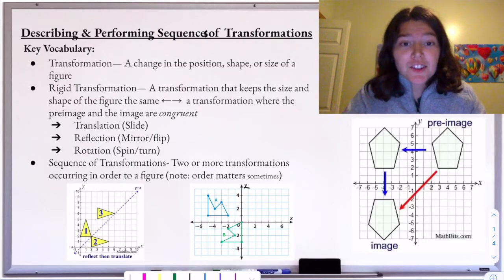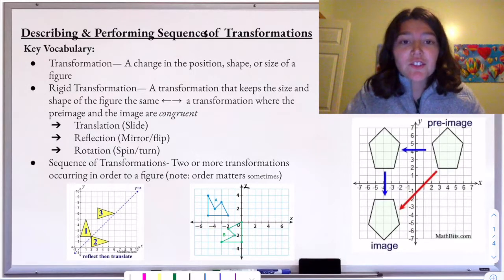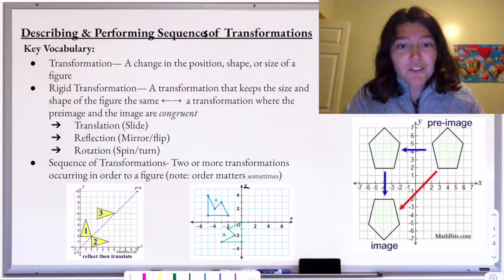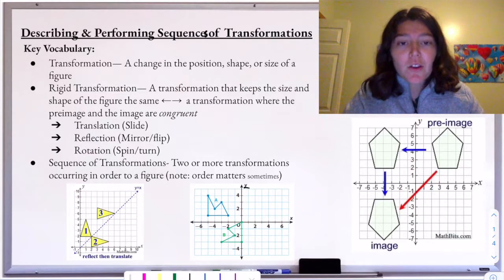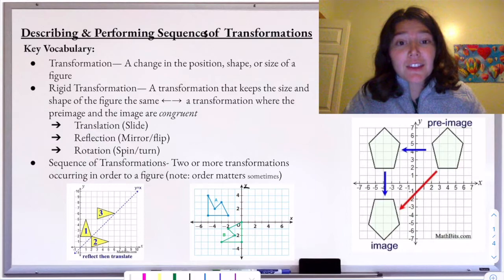We're in our transformations unit and we've already learned a lot. We've learned that transformations are changes in the position, shape, or size of a figure. We've learned that there are types of transformations called rigid transformations, and those are transformations that keep the size and shape of the figure the same. In other words, transformations where the pre-image and the image are congruent, meaning they have the same side lengths and the same angles.